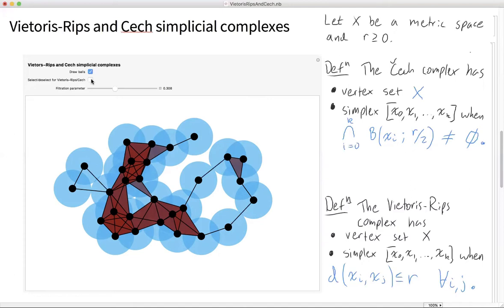In practice, however, the Čech complex is a little harder to compute because you need to detect these three-fold intersections or k-fold intersections. So in practice, people do computations more frequently with the Vietoris-Rips complex.